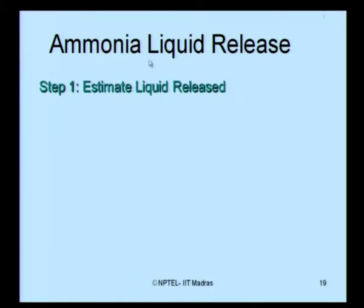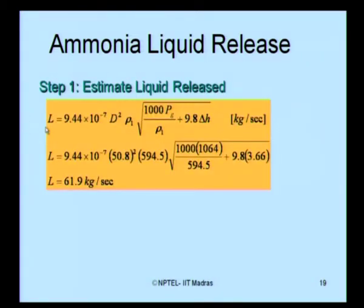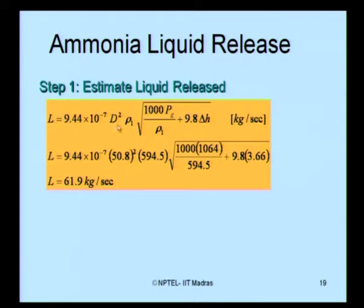In Step 1, we estimate the liquid being released from the vessel at rupture using the standard expression. Substituting values — d = 50.8, ρ = 594.5, Pg = 1064, Δh = 3.66 — the liquid release rate is approximately 61.9 kg per second.